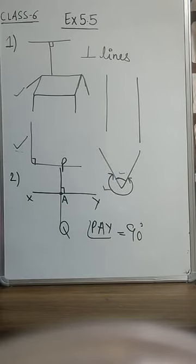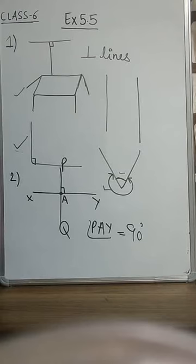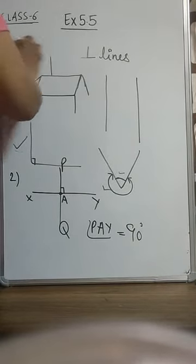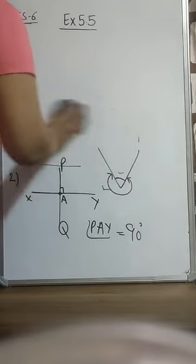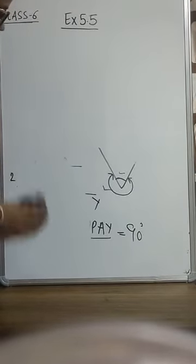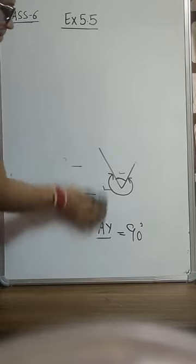The next question has 2 square sets — find the measure of the angle at the corner; you can do it yourself. Now we are coming to question number 4, which we will do with the help of a figure.